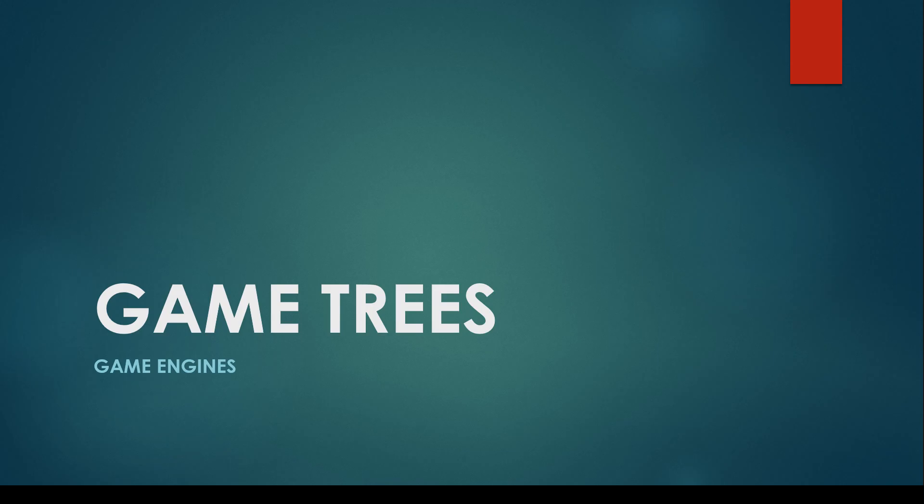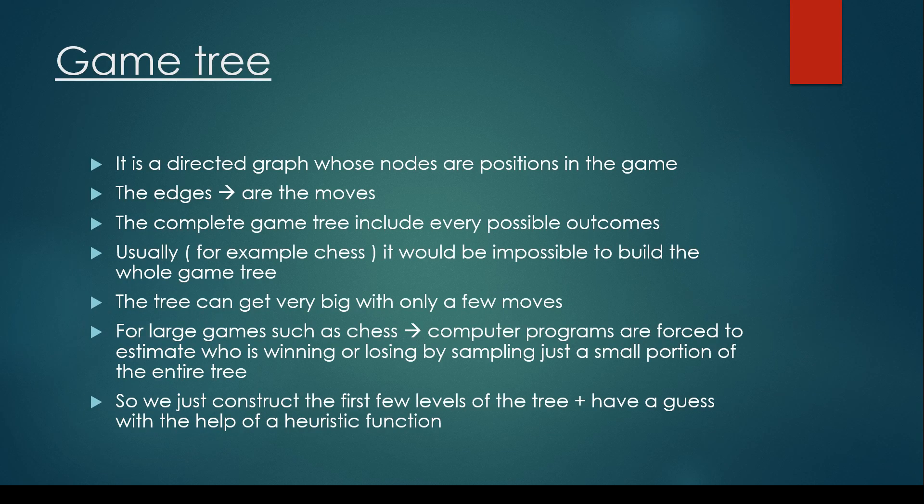In this section we are going to talk about game engines or game trees. What is a game tree? Basically it is a directed graph whose nodes are positions in the game. It is basically a tree-like structure where the edges are the moves and the nodes are basically the current states.